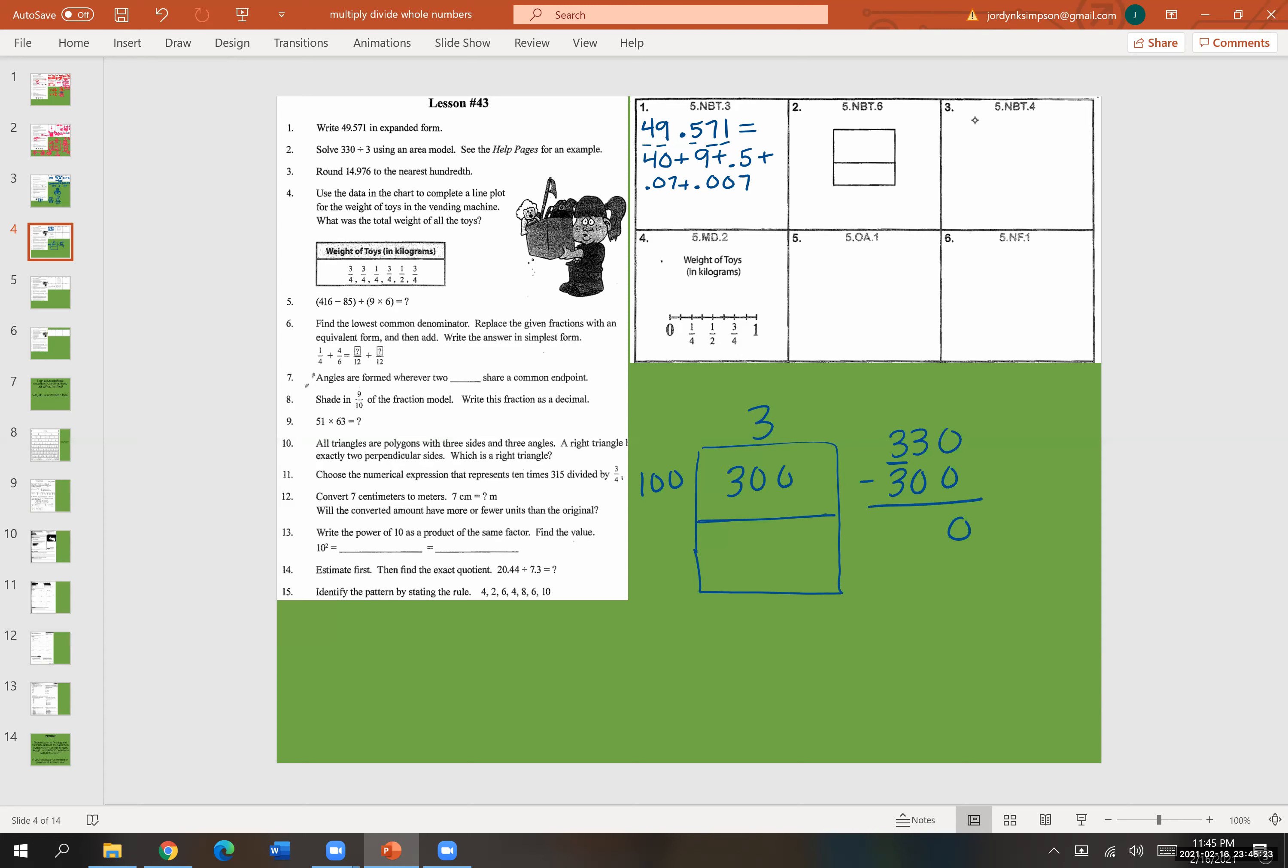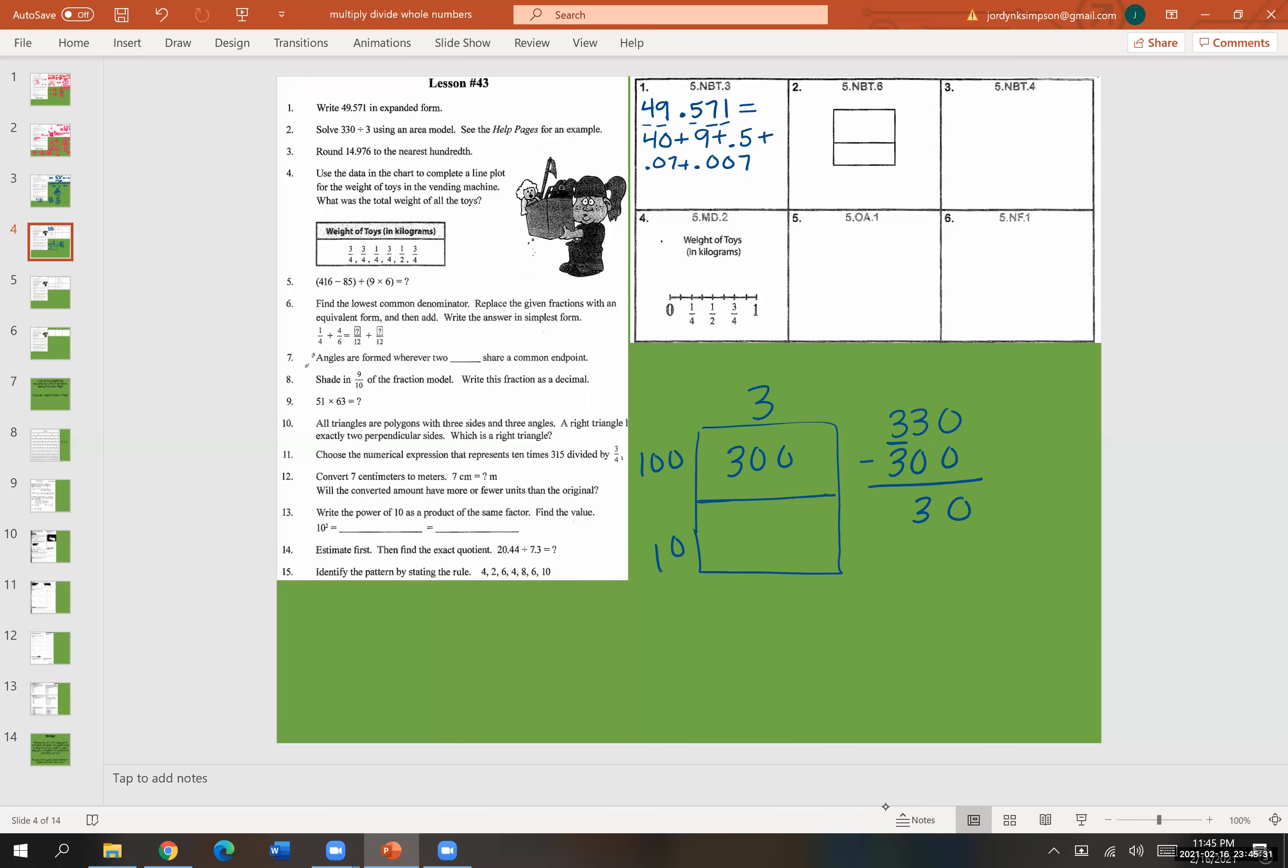So if we subtract that out, zero, zero, zero, three, and then a zero, which would end up 30. Well, how many threes are in 30? That would be 10. And 10 times three is 30, which would end up getting me to zero. So then you have to add up the 100 and the 10, which would get me 110. So your answer would be 110.